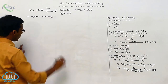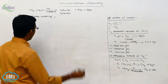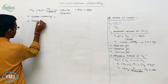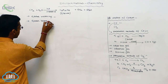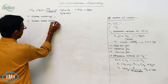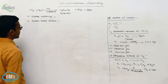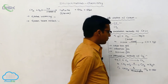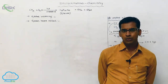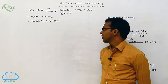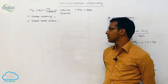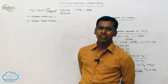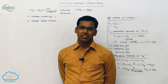The global warming and greenhouse effect are caused by CO₂. CO₂ is mainly responsible for global warming and the greenhouse effect. Now let's discuss what global warming and greenhouse effect actually are.